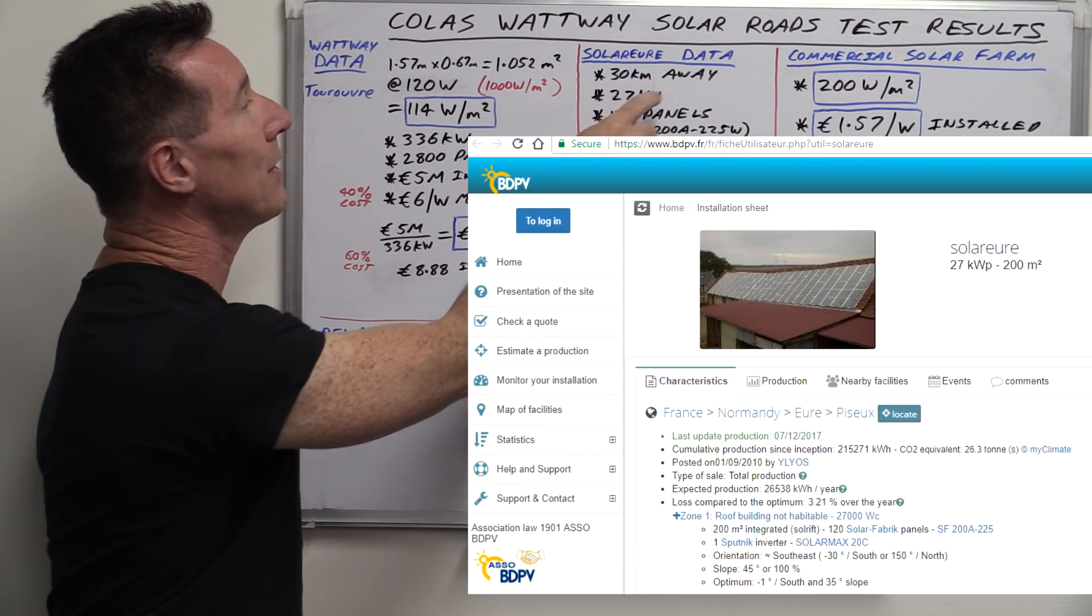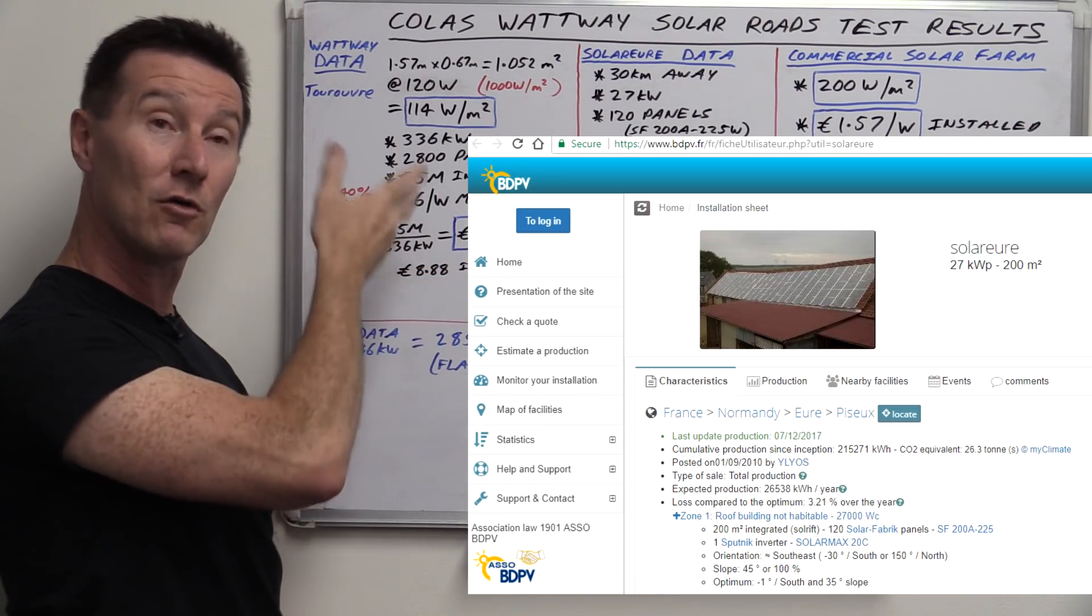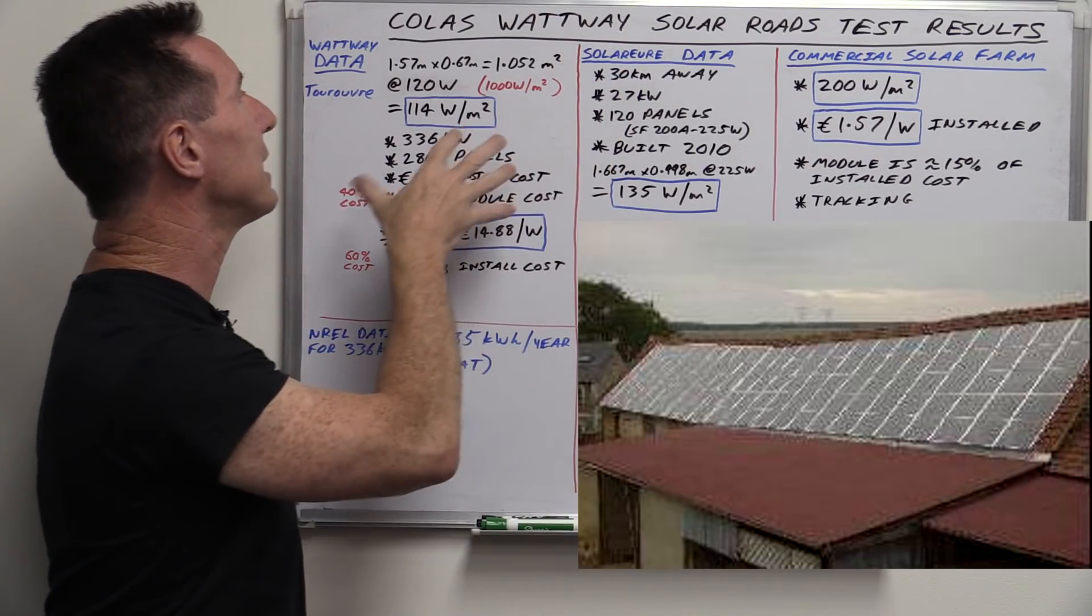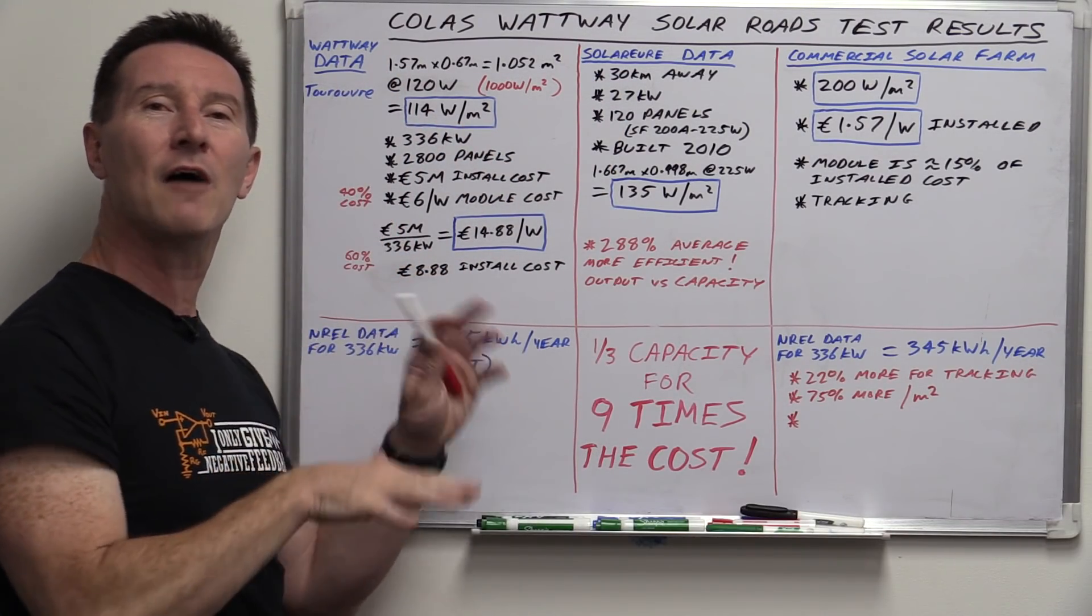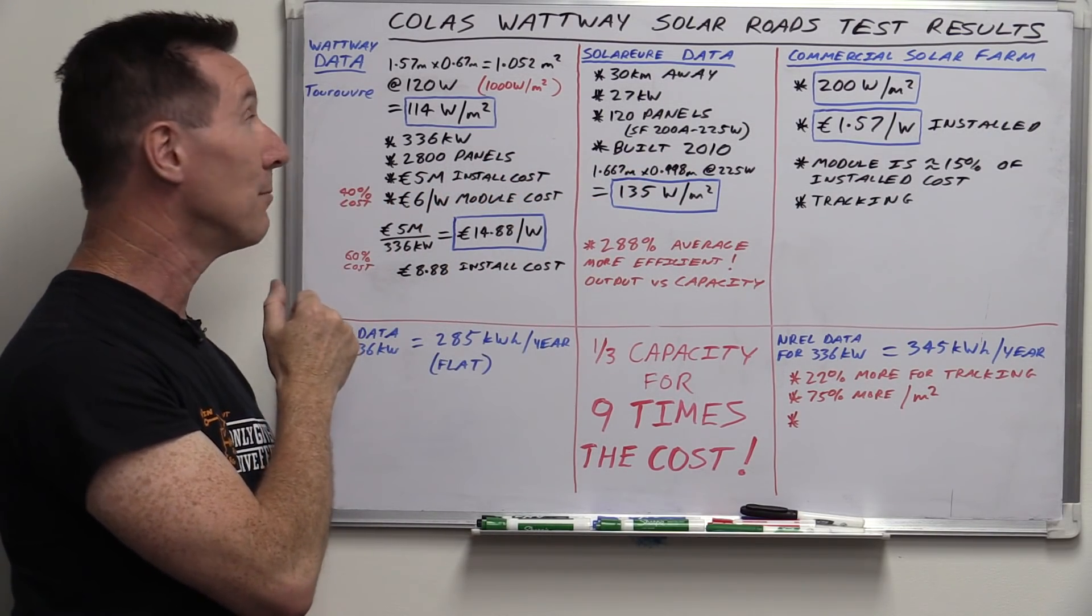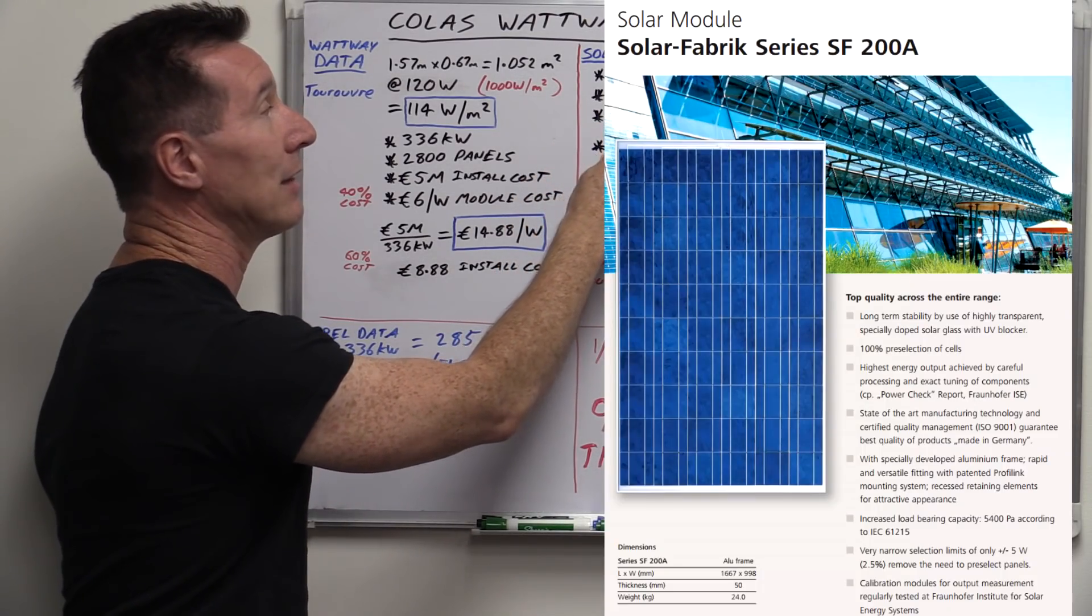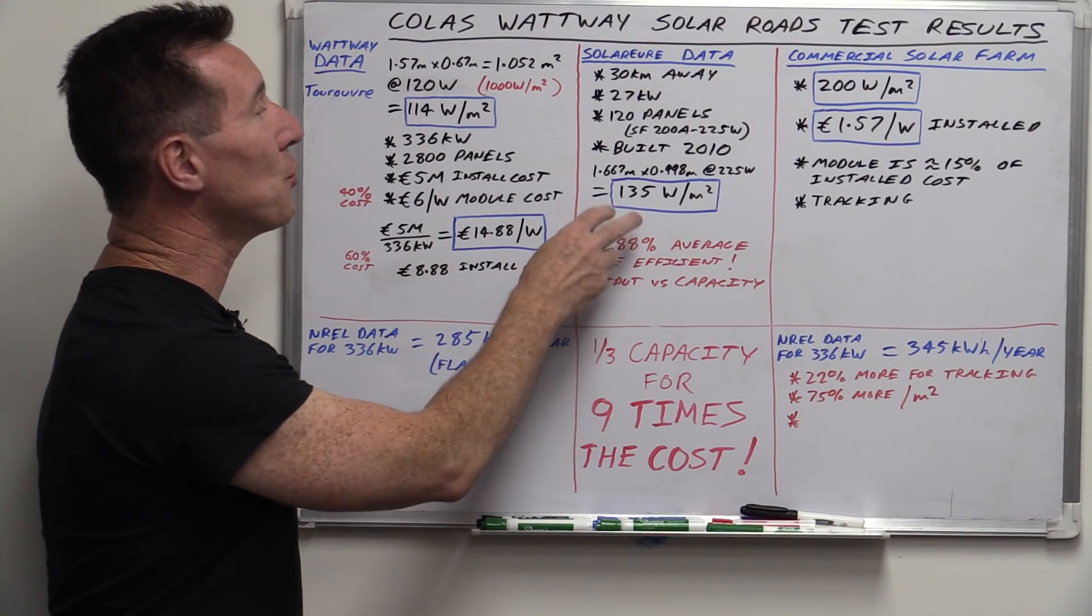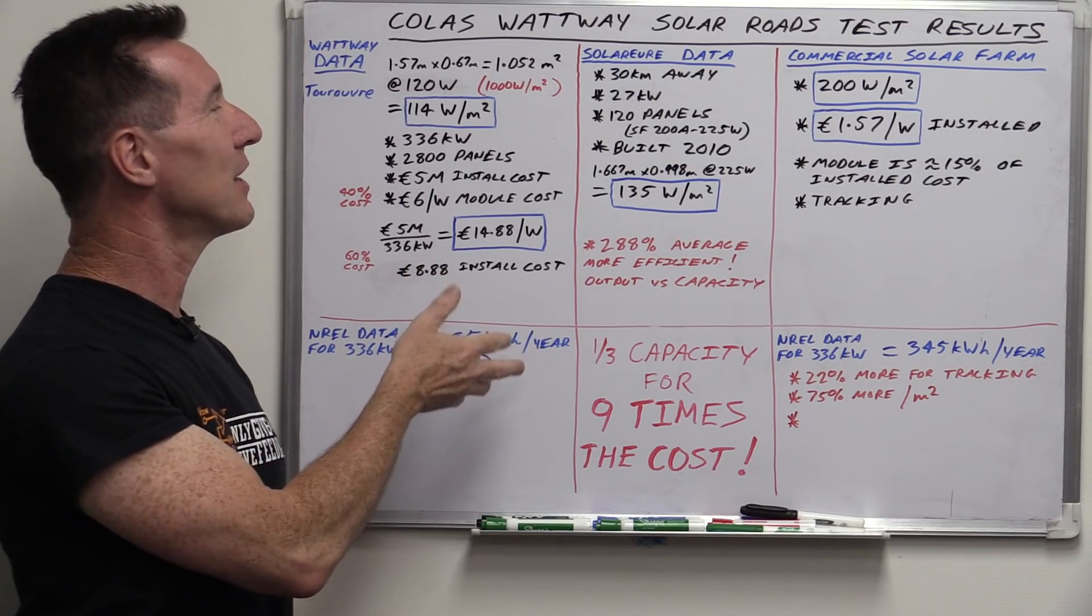So I found this one called Solar Uray or whatever it is. And this is a 27 kilowatt system. So it's a reasonable size. And here's a photo of it on top of a house or a farm or whatever. And it's 30 kilometers away from the Colas Wattway one. So good enough over the span of the year to have very similar weather, only 30 kilometers apart. And it's got 120 panels. I'll link in the data sheet down below for those playing along at home. And it was actually built in 2010.